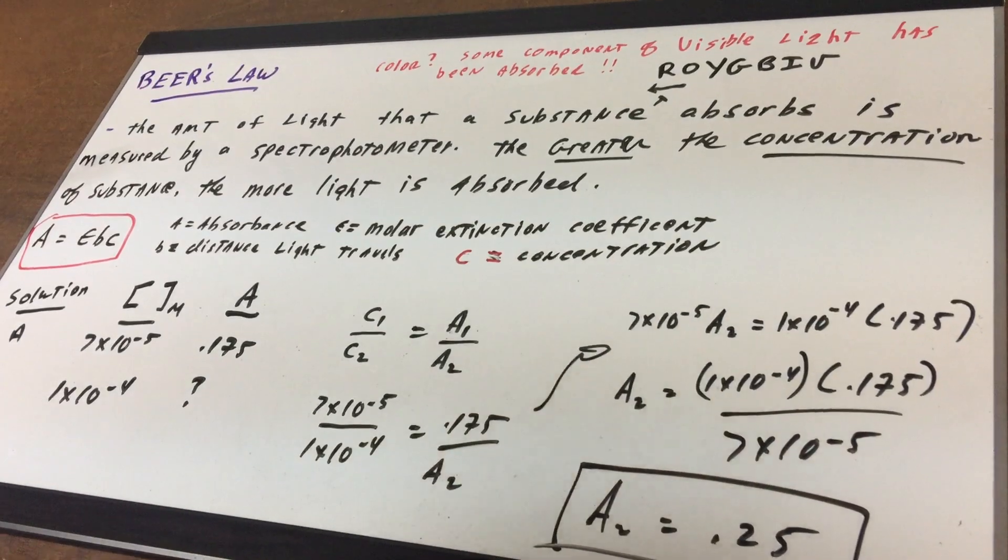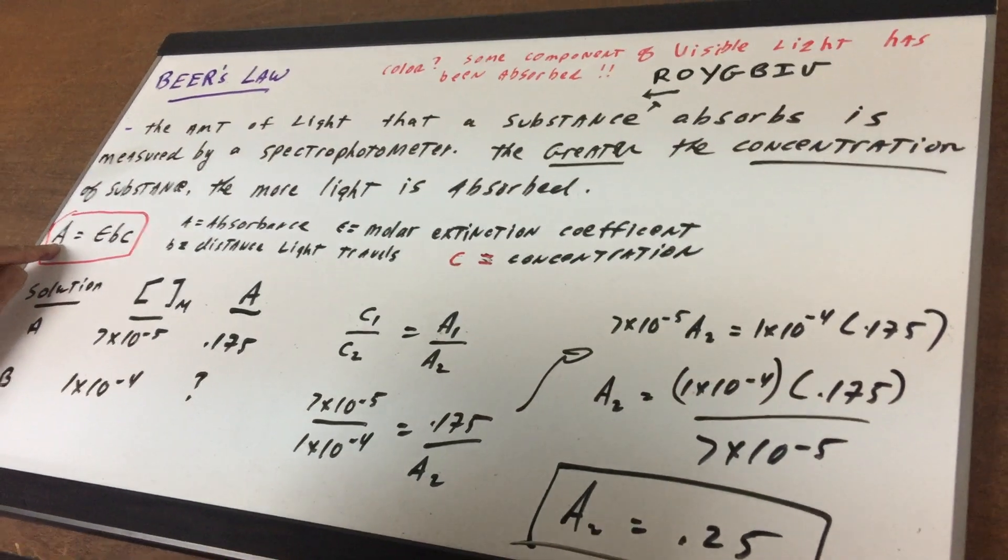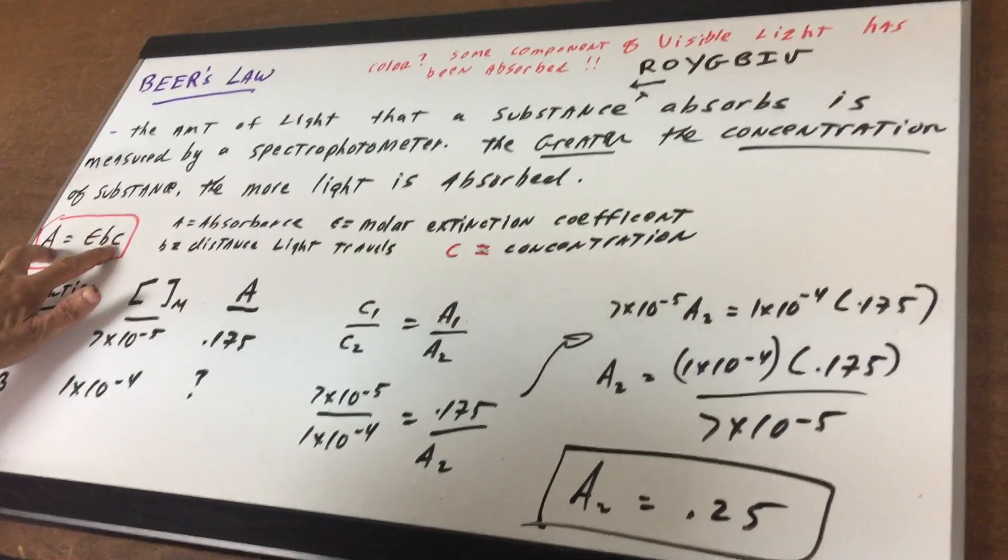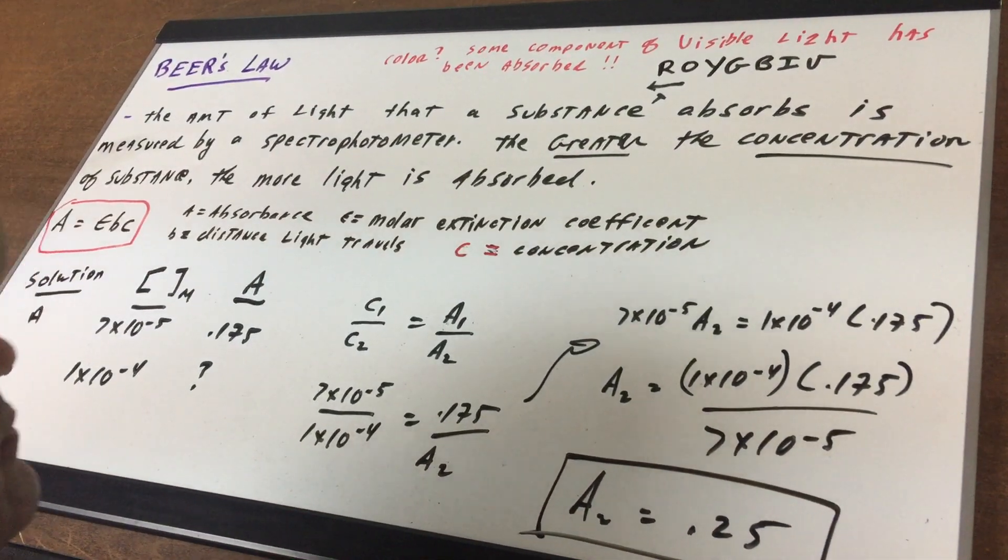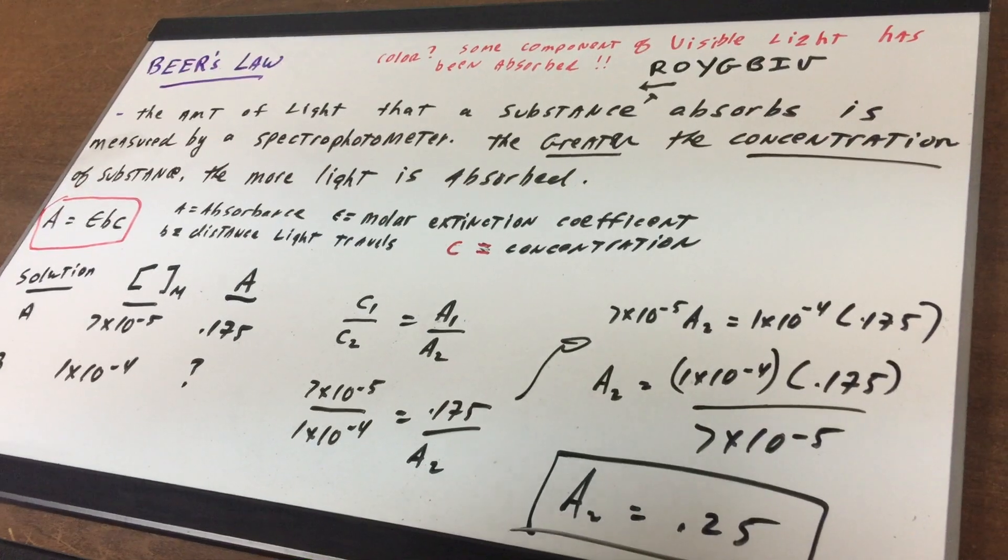Now I hope you can see from this formula that concentration and absorbance are on opposite sides of the equation, which means they're directly related, and that's going to be important to understand in this problem.